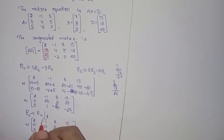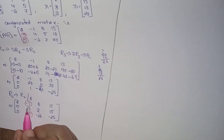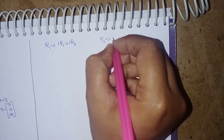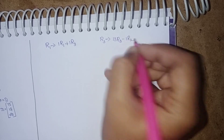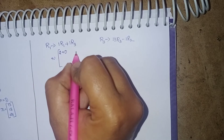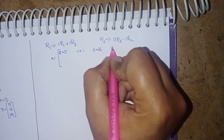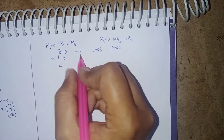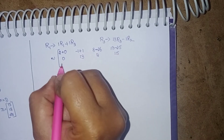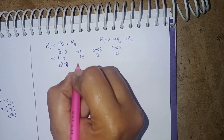Now convert these two elements into zeros using row operations. In R1: 1 time of R1 plus 1 time of R3, because the element in row 1 has minus 1, so we take plus. In R3: 13 times of R3 minus 1 time of R2. For R1: 1×R1 plus 1×R3, the minus 1 plus gives a result, and 13 minus 25 for the constant. R2 is not disturbed, write as it is.